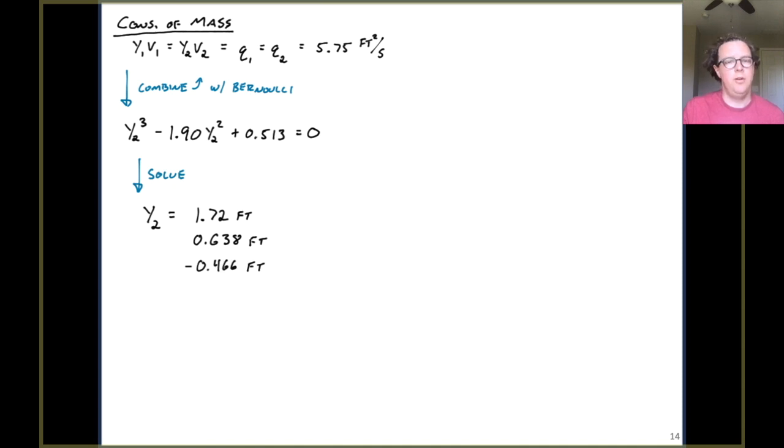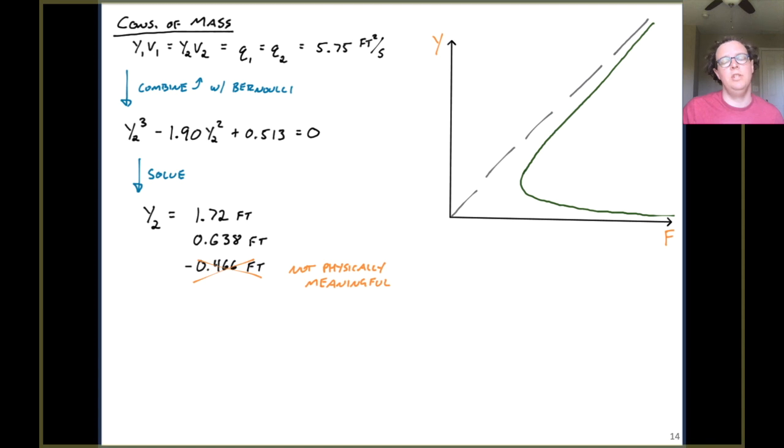So this is 100% a solvable equation. And what you can be sure of is that the depth downstream of that bump is either 1.72 feet or 0.638 feet or negative 0.466 feet. So we know the negative is not physically meaningful, but that still doesn't get us to an answer. What that tells us is there are two possible depths that might exist. So I want to draw our specific energy diagram once again and talk you through this problem.